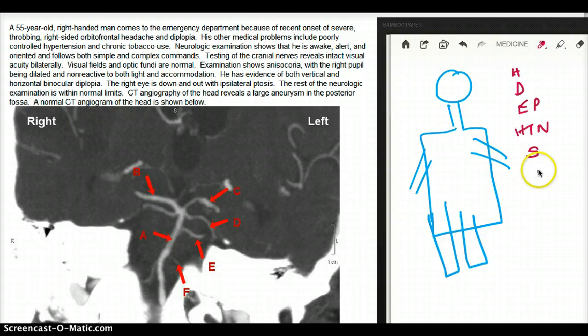Okay, so optic nerve is fine. Exam shows anisocoria, so problem with cranial nerve 3, with right pupil being dilated and non-reactive to both light and accommodation. So the right side is dilated. Left is okay.